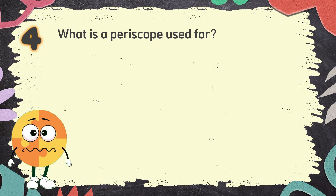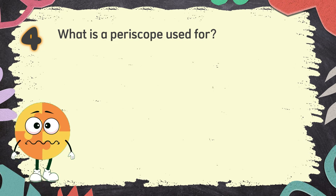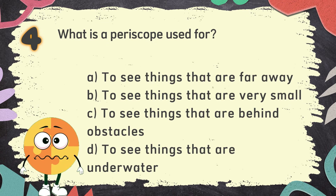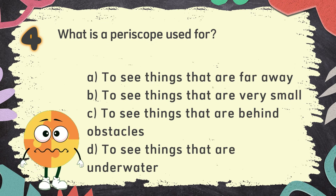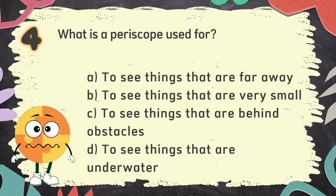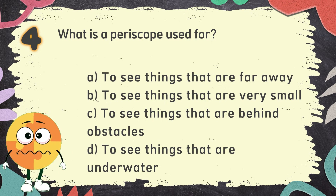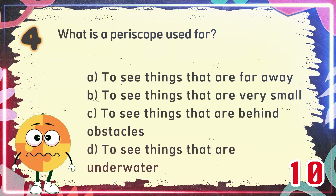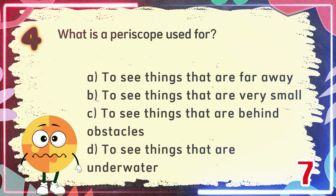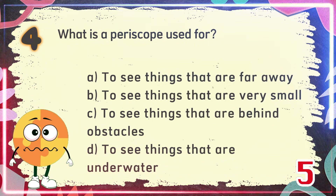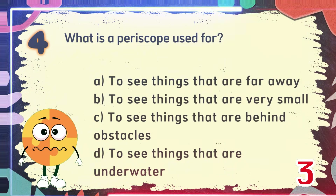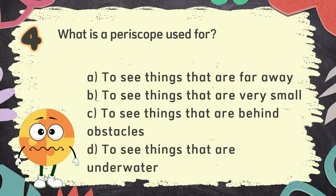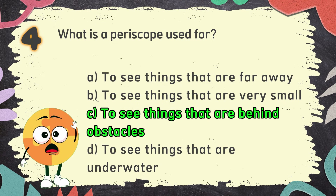Number 4. What is a periscope used for? The choices are: A. To see things that are far away, B. To see things that are very small, C. To see things that are behind obstacles, D. To see things that are underwater. The correct answer is C: To see things that are behind obstacles.